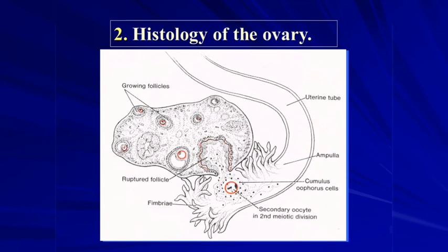The ovary is covered by simple cuboidal epithelium. The cortex is connective tissue, and within it we can see follicles at different stages of maturation: primordial, primary, secondary, tertiary, and the mature Graafian follicle.